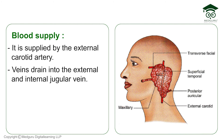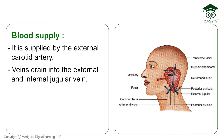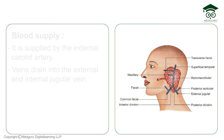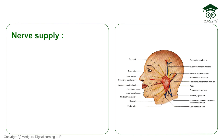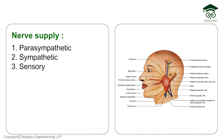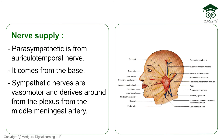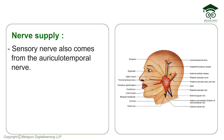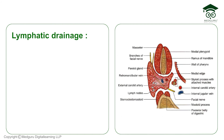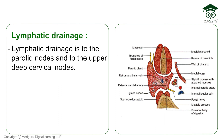The blood supply of the parotid gland is from the external carotid artery, and venous drainage is into the external and internal jugular veins. Nerve supply is of three types: parasympathetic — via the auriculotemporal nerve; sympathetic — vasomotor fibers derived from the plexus around the middle meningeal artery; and sensory — also via the auriculotemporal nerve. Lymphatic drainage is to the parotid nodes and then to the upper deep cervical nodes.